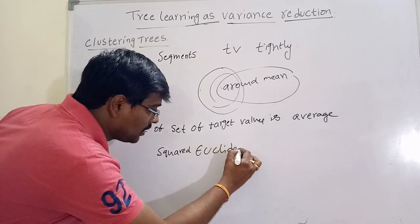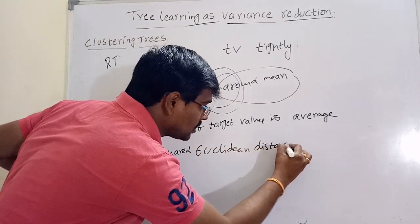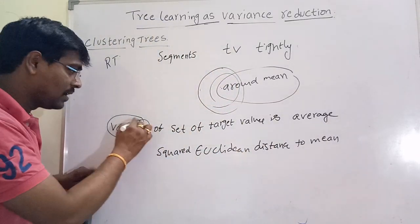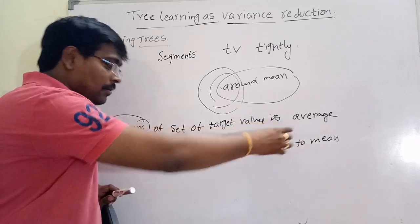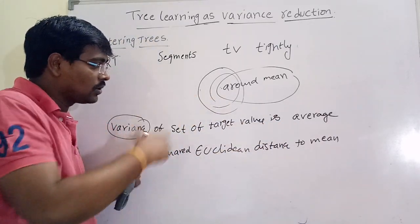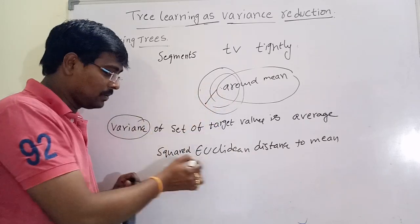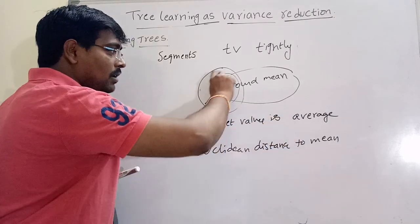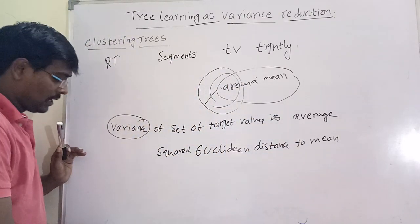The variance is calculated by using the average squared Euclidean distance to the mean. Suppose this is one item — we calculate the Euclidean distance to the mean, perform the square operation, and finally perform the average of all the items.